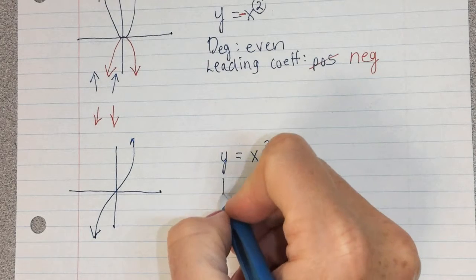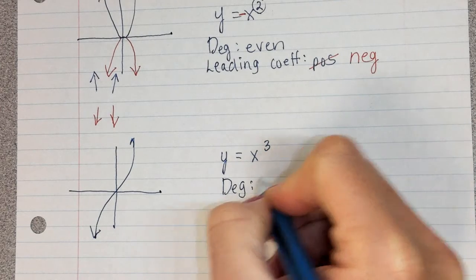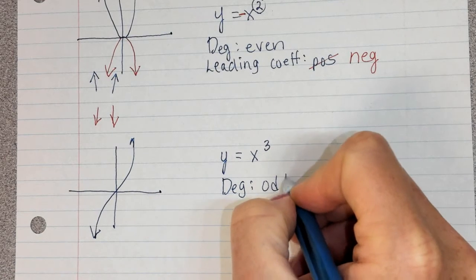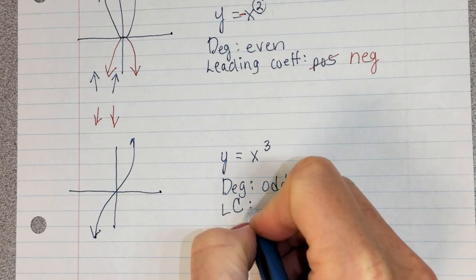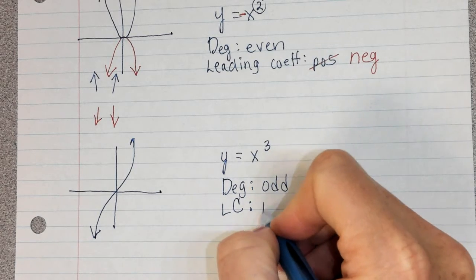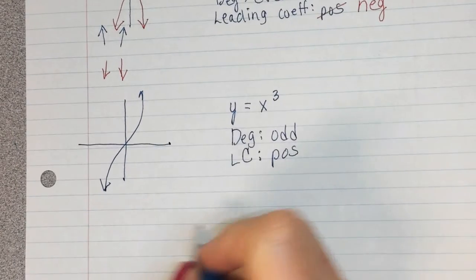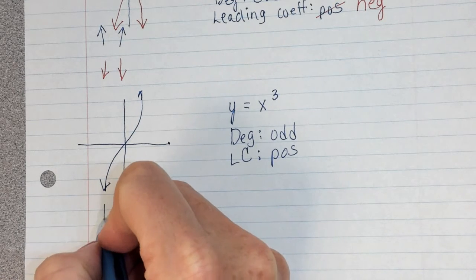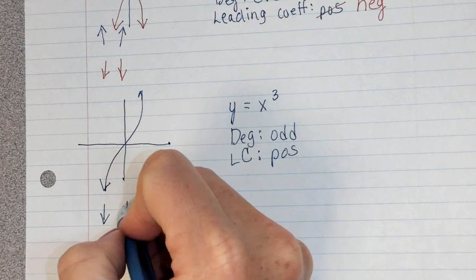So with this degree, what's true of the degree right there, it is what? Odd. And the leading coefficient, I'm just going to call that LC, is what? Positive. And we can see that the behavior here is opposite. So at this end it's pointing down and at this end it's pointing up, it has opposite end behavior.